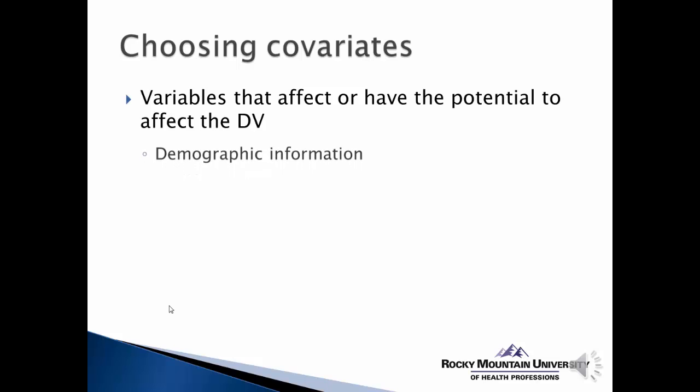Using our weight loss example, using common sense and clinical judgment, we can come up with a pretty good list of things that might affect the dependent variable. Then we've got to decide whether we need to control these in the design or in the analysis. Very often, we can't necessarily control them in the design, or we might not have foreseen they were going to be a problem, and then we've got to adjust for them in the analysis.